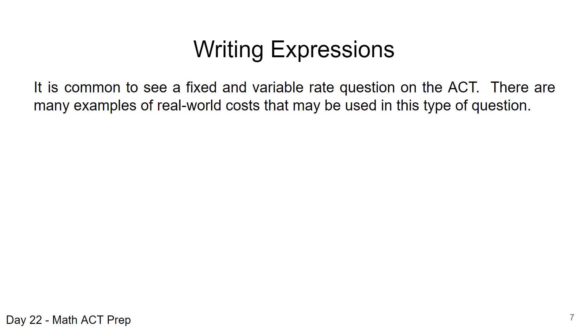One of the applications that we have a lot of questions on on the ACT that deal with converting these words to expressions are questions that are the rate questions where usually you have a fixed value and a variable. There are different kind of real world examples for this. For example, when you rent a car, there is usually a fixed fee for the day and then a variable cost dependent on how many miles you drive that day. So no matter what, you're going to pay the fixed fee. And the variable, which could be a various amount from person to person, is dependent on the number of miles you drive.